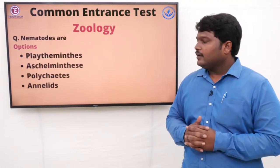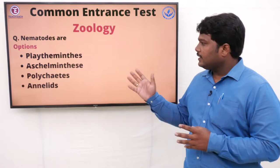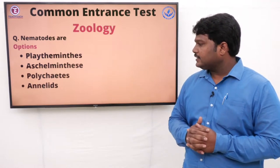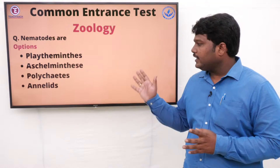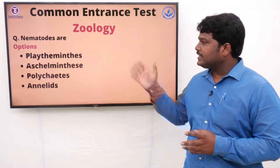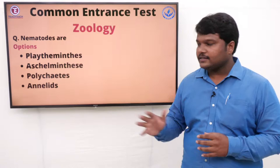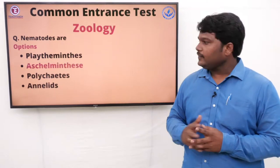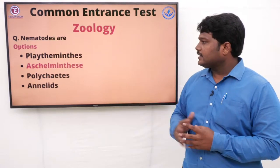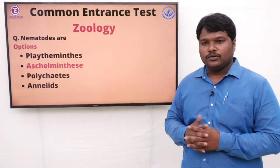Question 40: Nematodes are. Options: A) Platyhelminthes, B) Aschelminthes, C) Polychaetes, D) Annelids. The answer is Aschelminthes. Nematodes belong to Aschelminthes.